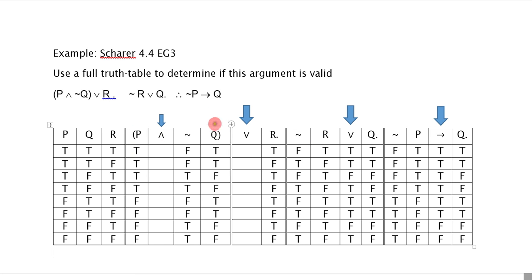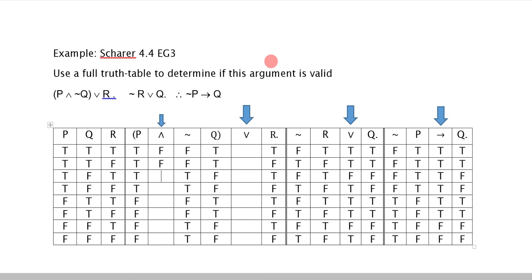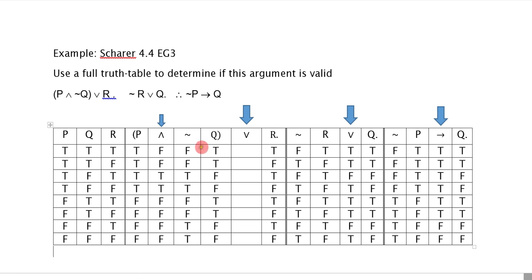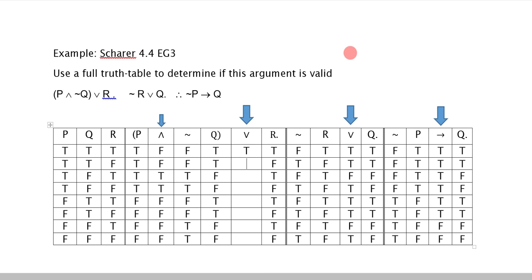To evaluate the AND, the left conjunct is P and the right conjunct is NOT Q, and I only look at the negation column for that. AND is true in only one case: when both are true. So that gives false, false, true, true, false, false, false, false. Now I can look at the OR for premise one. The left disjunct's truth value is only represented by the main connective column. The right disjunct is R. Combining the conjunction column and R gives: true, false, true, true, true, false, true, false.